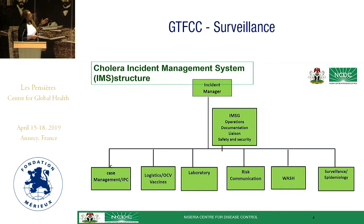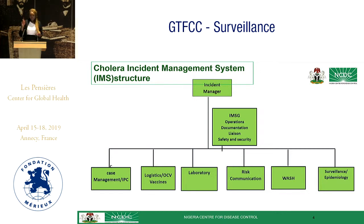This is the incident management structure that is composed when the emergency operations center is activated. We have the incident manager, who has an incident management support group — the IMSG. There is someone in charge of operations, someone handling documentation, a liaison officer working with partners, and safety and security. All these form the incident management support group, and together with the incident manager they form the coordination team.